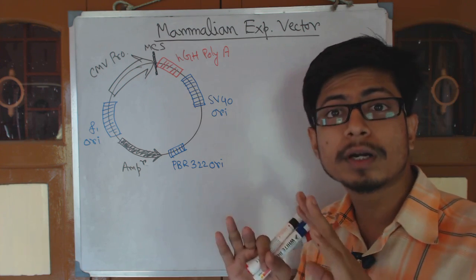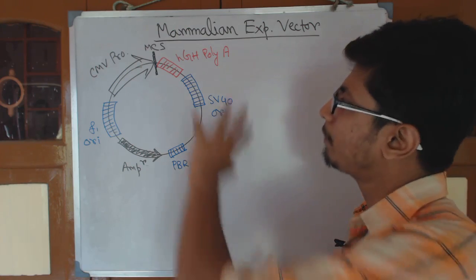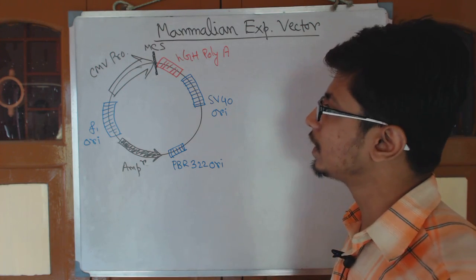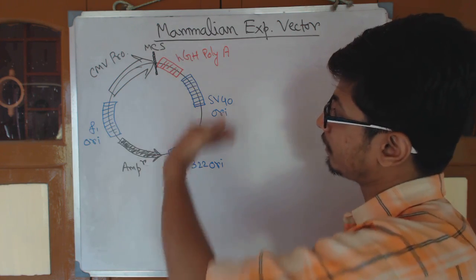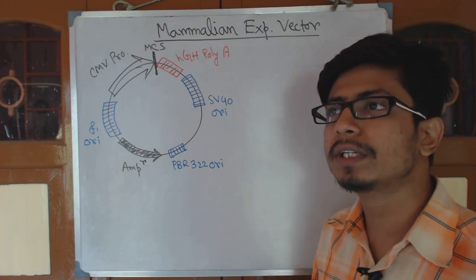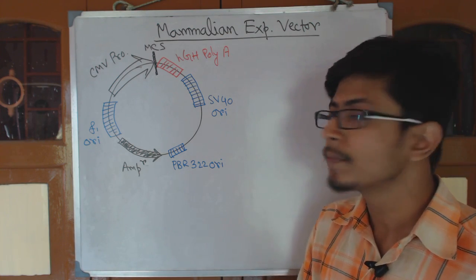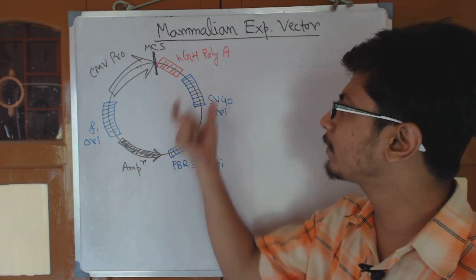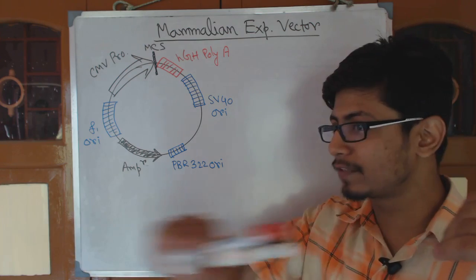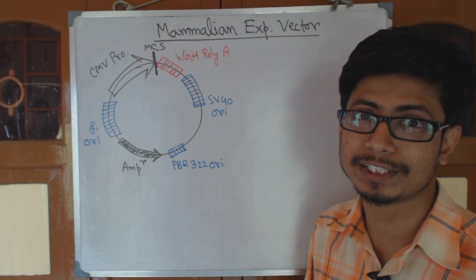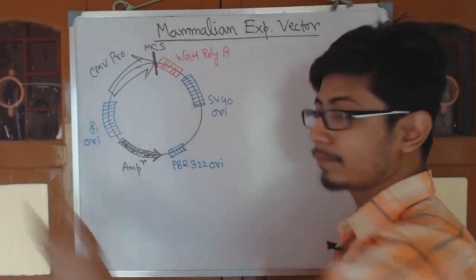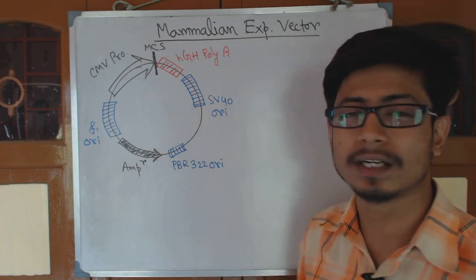There are many different types of mammalian expression vectors on the market, all commercial products. I'll talk about a simple example. An expression vector must contain an origin of replication. Here we have three different origins of replication, not one. Multiple origins are used because in eukaryotic expression not every origin works well for every gene or cell type. Also, in eukaryotes there is no operon concept — unlike prokaryotes, each gene requires its own separate promoter.